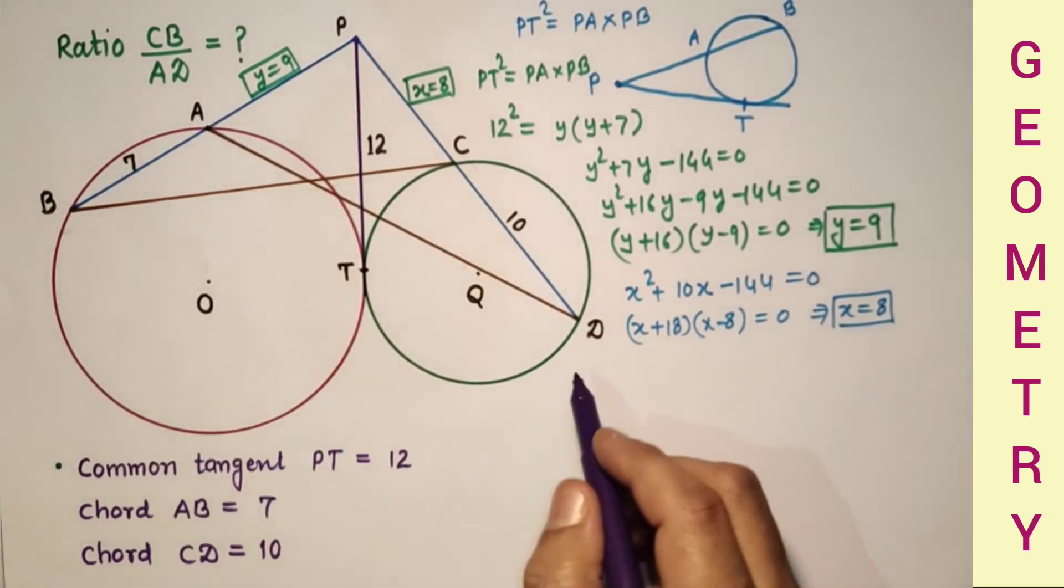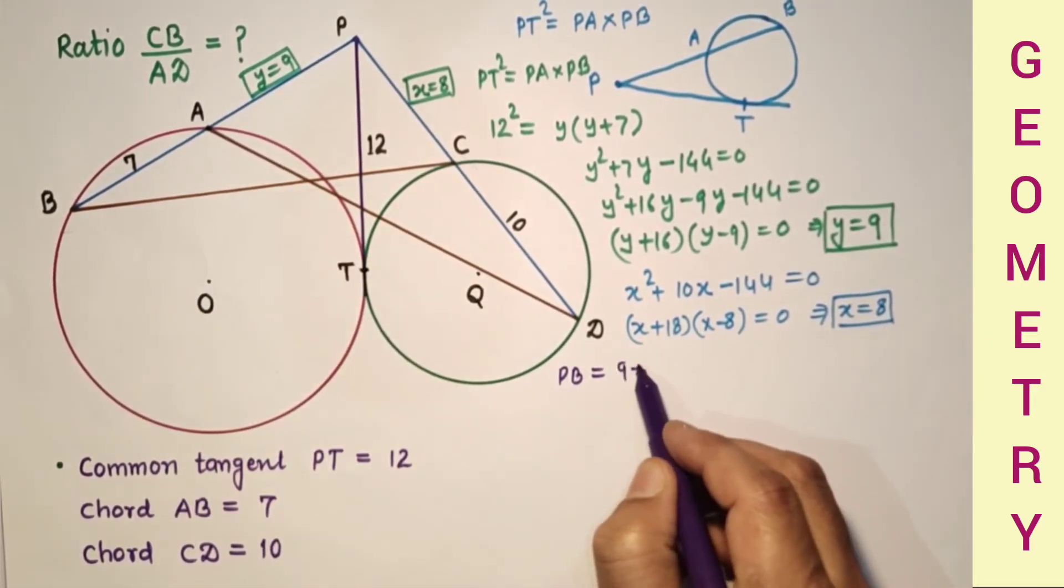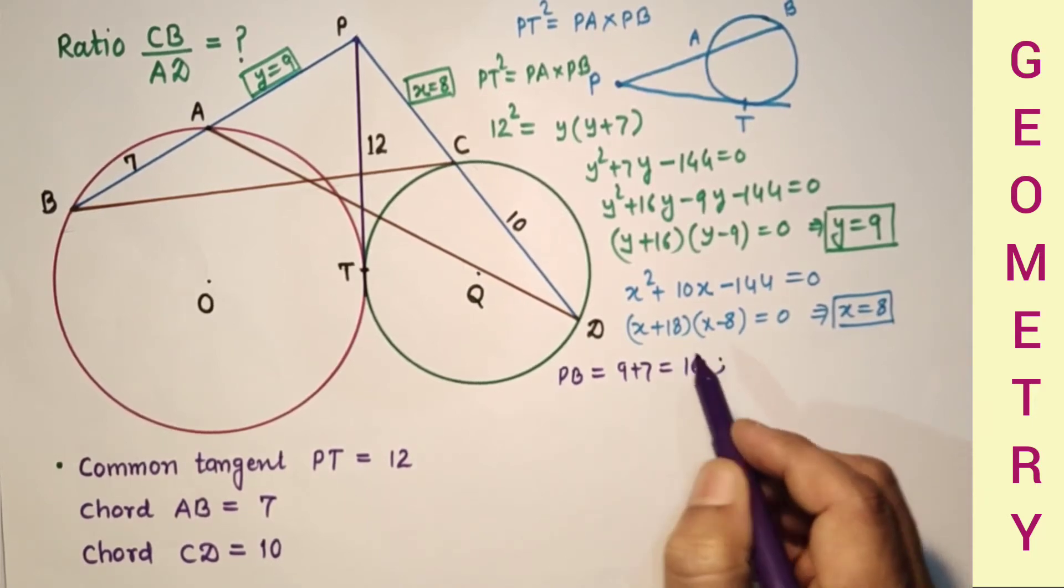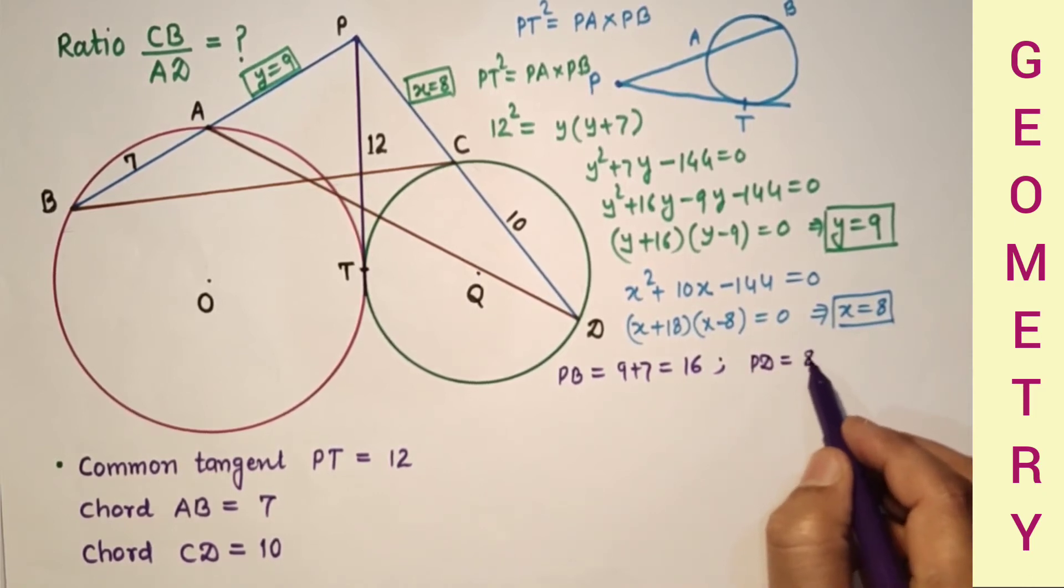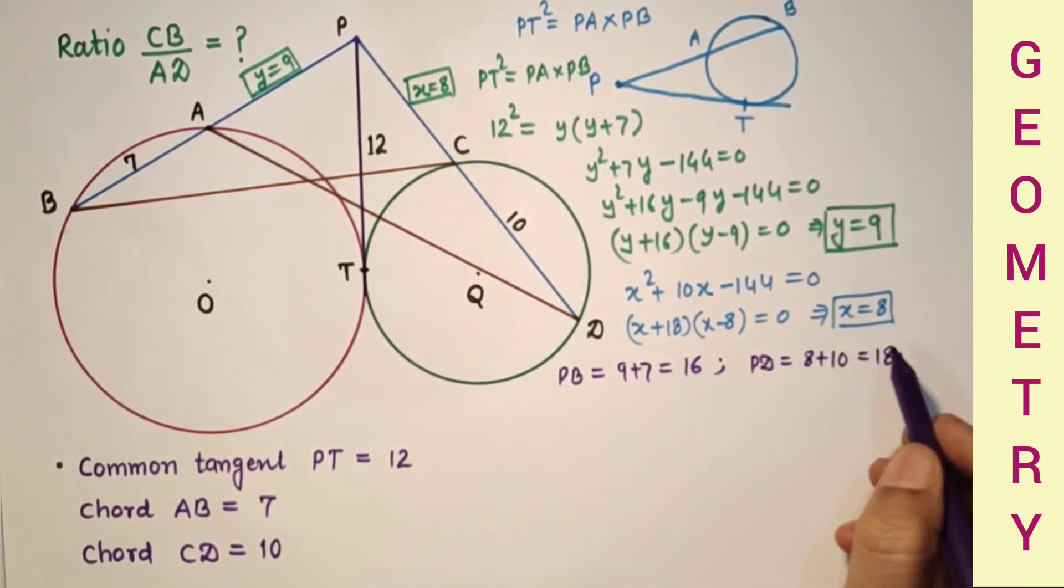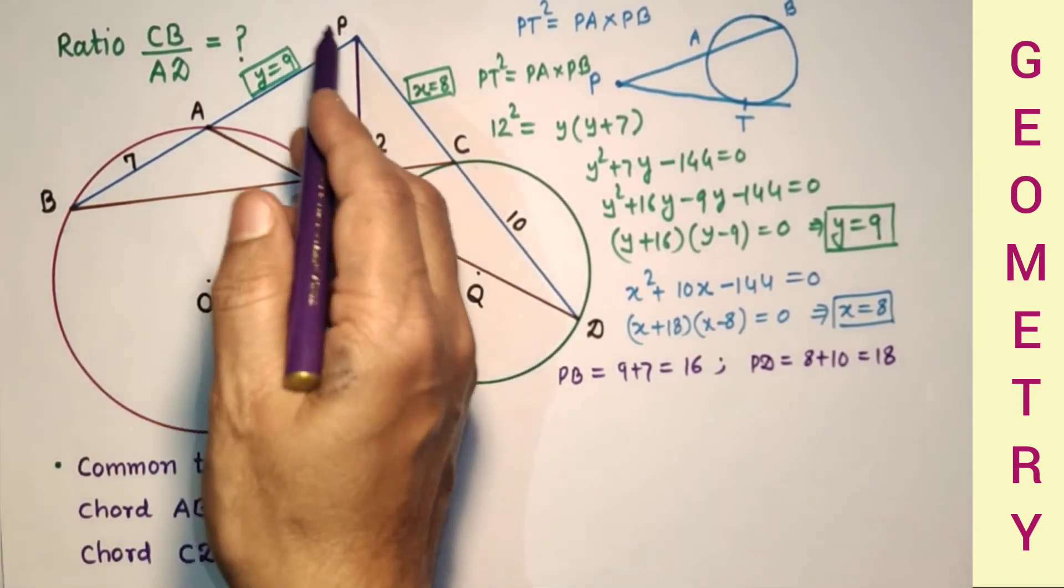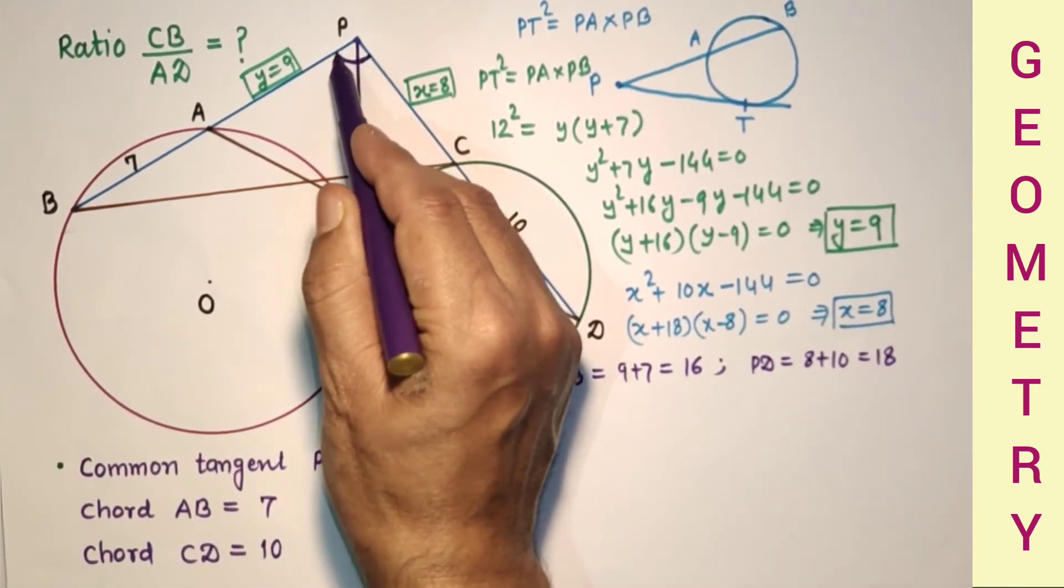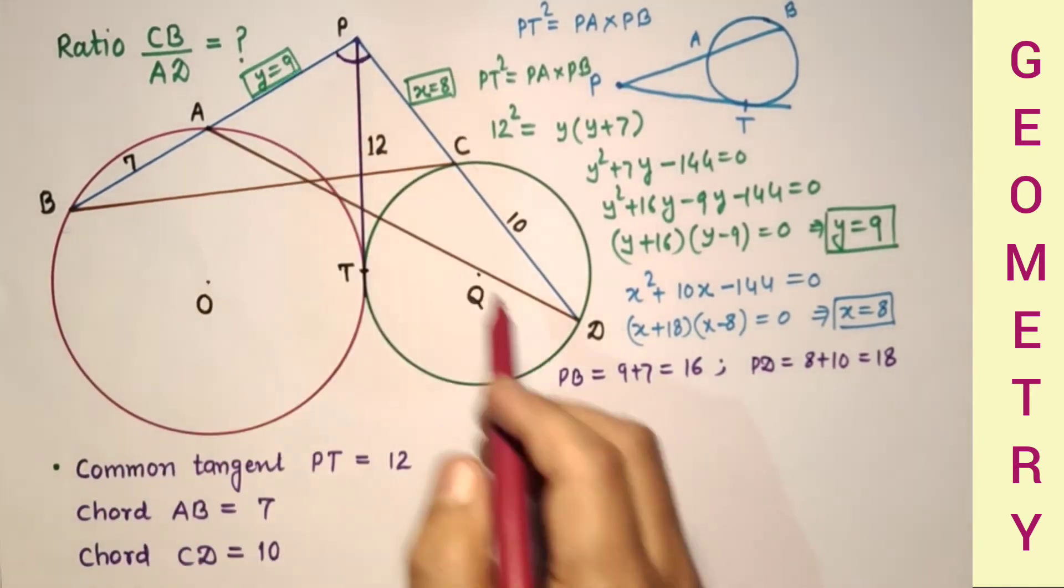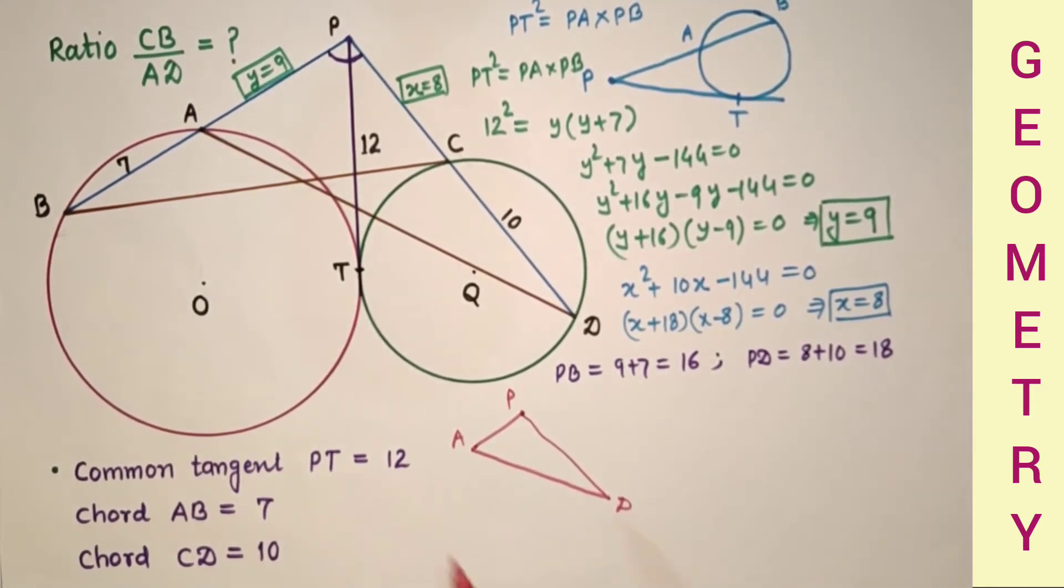So PB is equal to 9 plus 7 which is 16, PD is equal to 8 plus 10 which is 18. Now considering these two triangles PAD and PCB, in these two triangles this angle is common. So angle APD and angle CPB are equal.